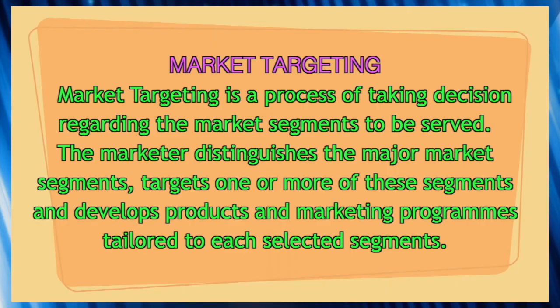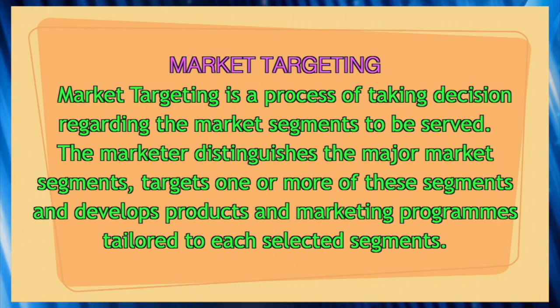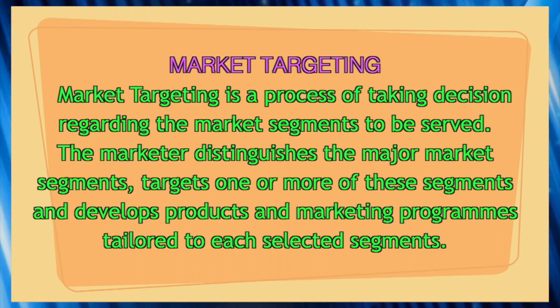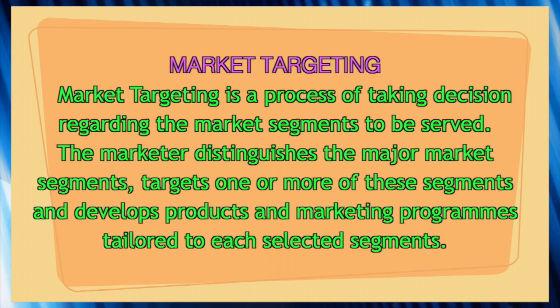Market targeting is basically a process of taking a decision regarding which market segments to cover and serve. A market comprises different segments and we cannot cover all of them, so the marketer distinguishes and measures market segments in terms of certain characteristics, then targets one or more segments and develops products and marketing programs tailored to each selected segment.